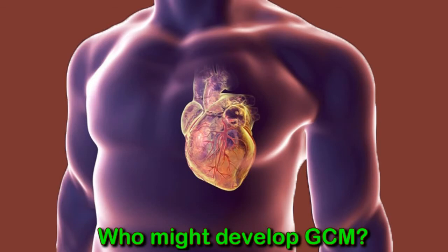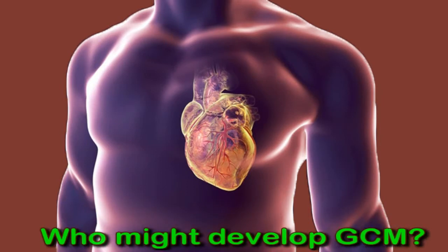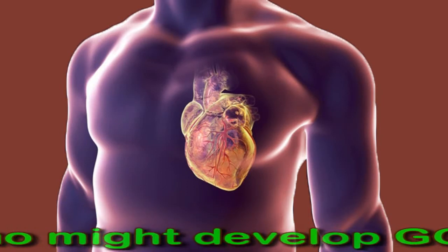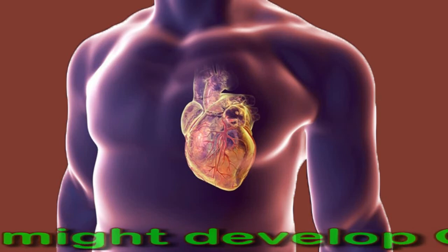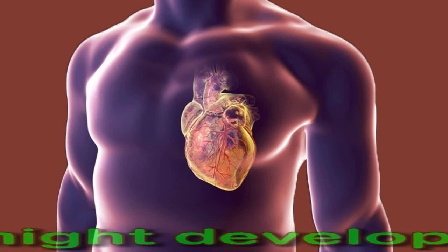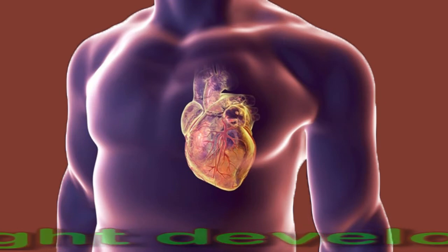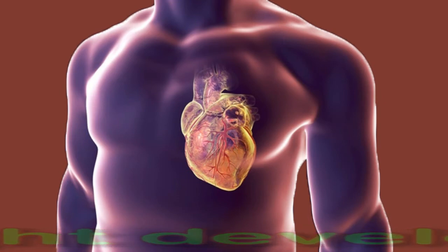The National Organization for Rare Disorders states that about 20% of people with giant cell myocarditis have autoimmune disorders, such as Crohn's disease, which cause the body's immune system to mistakenly attack healthy tissue. Some people with giant cell myocarditis have tumors in the thymus, an organ behind the breastbone.